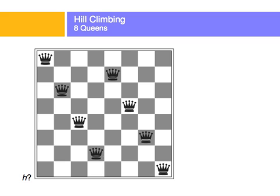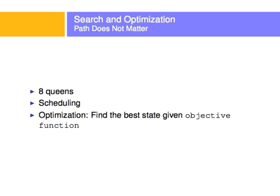In the eight queens problem, there's one queen attacking another — the goal is to place all eight queens without any attacking each other. When working on optimization problems, finding the best solution requires an objective function — some way of knowing whether one state is doing better than another state.